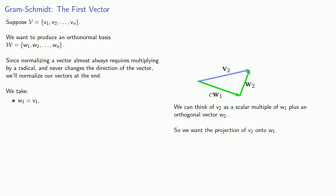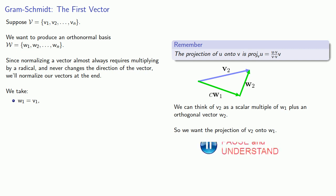And so we can think of v2 as some scalar multiple of w1 plus an orthogonal vector w2. So we want the projection of v2 onto w1. And if you don't remember what that looks like, that's going to be the dot product of the two vectors divided by the dot product of the vector we're projecting onto, pointed in the direction of that vector. So by the geometry, we see that we want w2 to be v2 minus that projection.